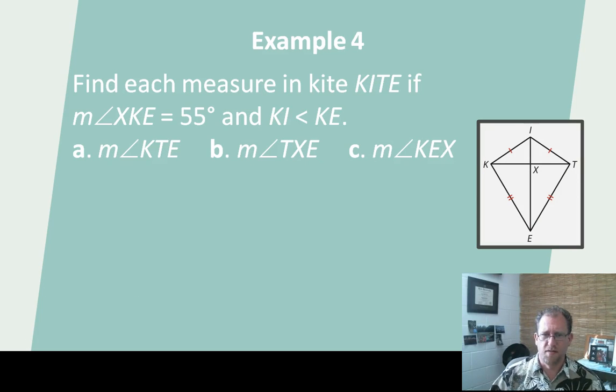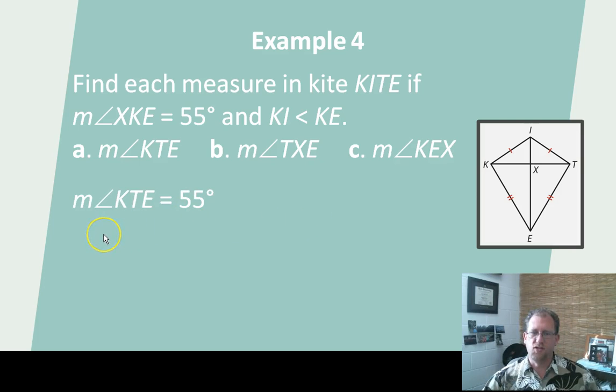Let's find some missing parts. The kite. Kite! Hey, that's cute. If angle XKE is 55 degrees, XKE, that's 55 degrees. And KI is less than KE. Okay, there you go. So let's look for the measure of angle KTE. Let's find that, shall we? Well, it is going to also be 55 degrees. Why is that? I'm going to pause the video and give you a chance to think about it. You pause the video. I'm going to pause the video. It doesn't really matter if I pause it. You pause the video. Think about why. Did you figure it out?